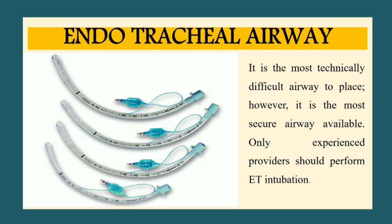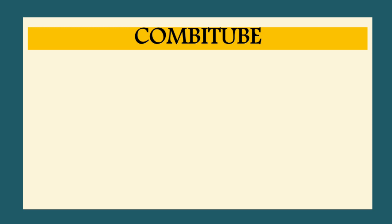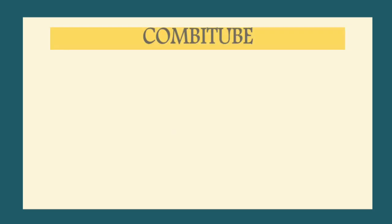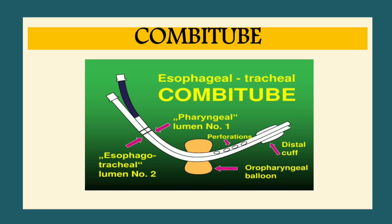The last infraglottic device is the combi tube, also referred to as the esophageal tracheal combi tube. It is an advanced airway alternative to endotracheal intubation that provides adequate ventilation. The combi tube has two separate balloons that must be inflated and two separate ports. The provider must correctly determine which port to ventilate through. It has two lumens: a pharyngeal lumen and an esophageal-tracheal lumen, with a distal cuff.